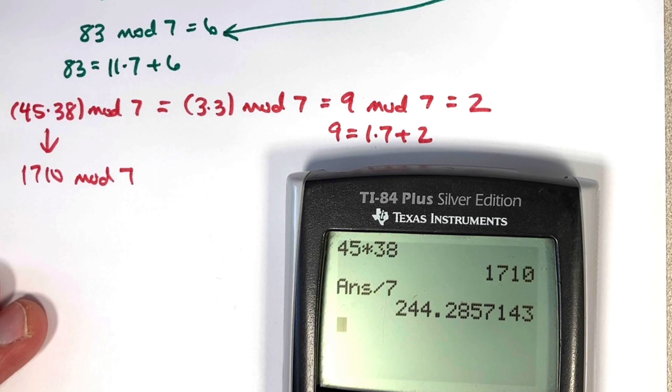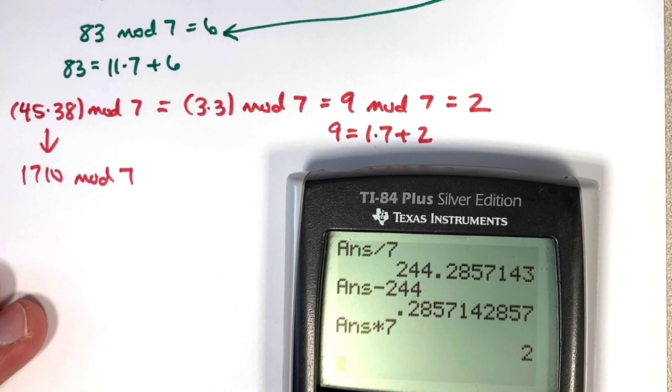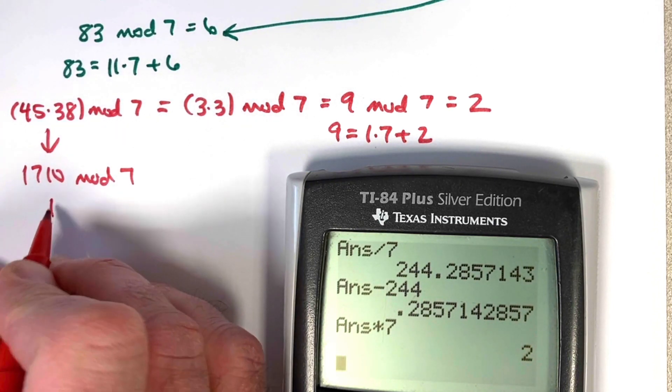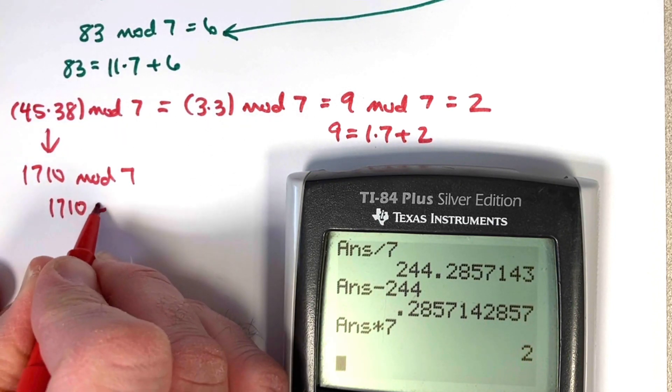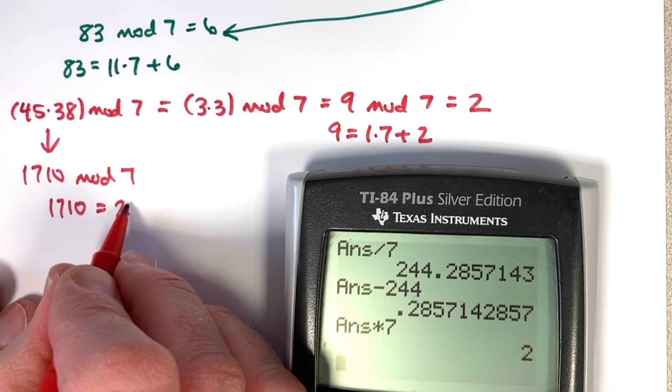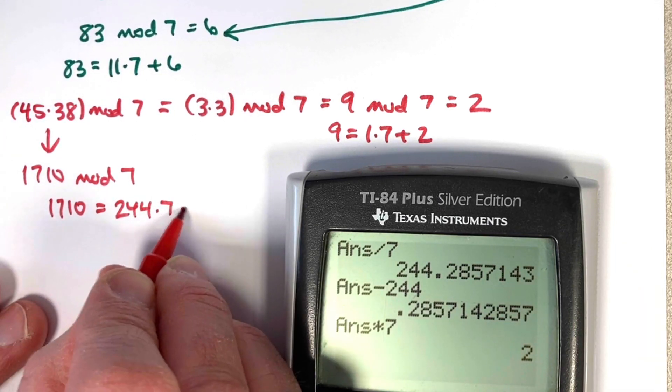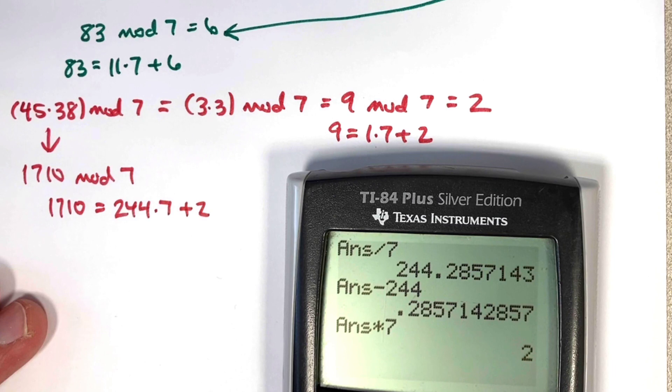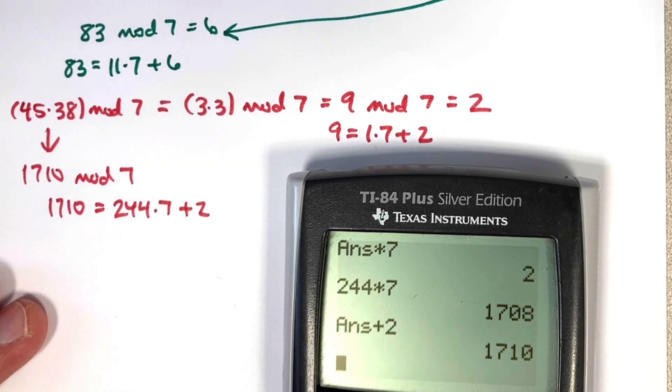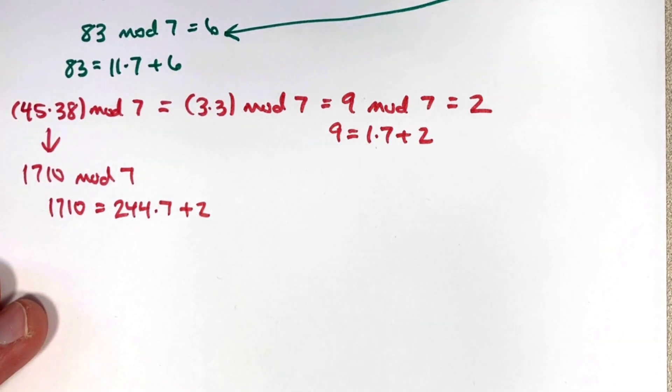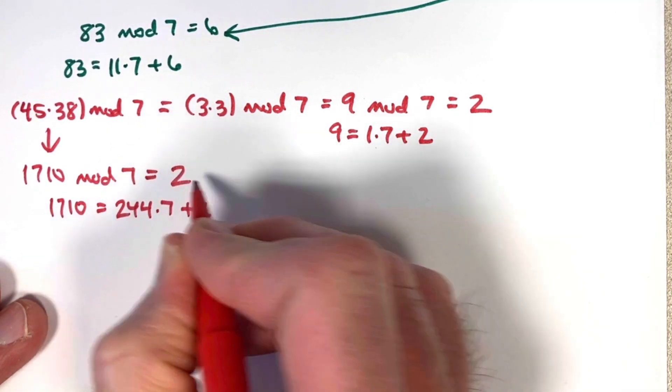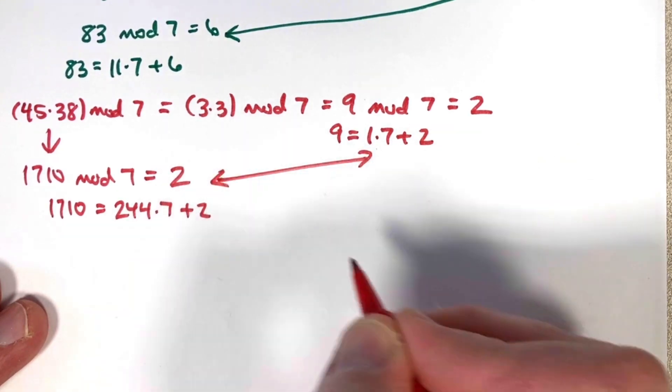I get a decimal. If I subtract off the whole number part and multiply what's left by 7, I get 2. That implies the remainder is 2. 1,710 equals 244 times 7 plus 2. If you're not sure, you can double check it. 244 times 7 plus 2 is 1,710. This implies that the answer is 2. I get the exact same thing as before.